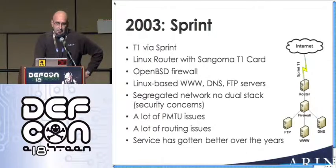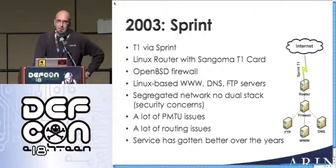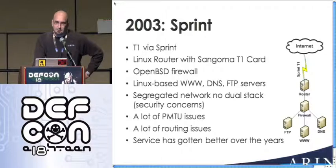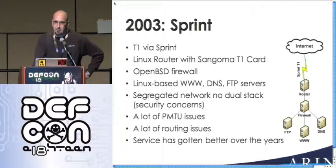Issues we had with this network included a lot of path MTU problems. Basically, somewhere there's a tunnel on the network — Sprint certainly had tunnels at this time. Even though our T1 to them was native IPv6, upstream Sprint had infrastructure that didn't support IPv6 at all, and they set up tunnels to get around it. This caused sudden drops in MTU. V6 has mechanisms to detect this — path MTU discovery — but that didn't always work. Our Linux router didn't handle it well, and OpenBSD firewall rules dropped the wrong ICMP packets, so fragmentation would break and packets would just fall on the floor.